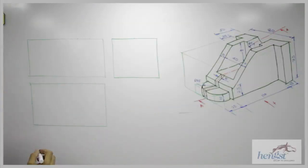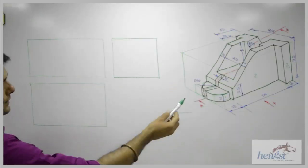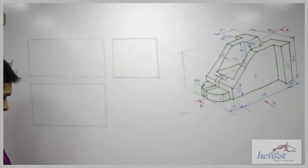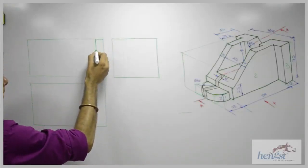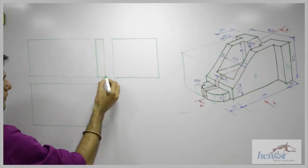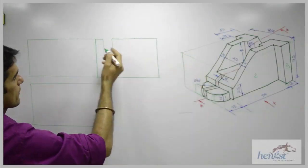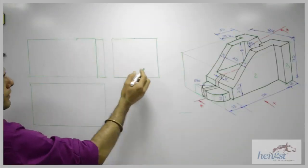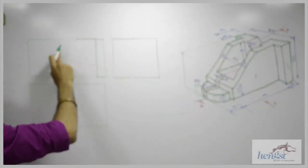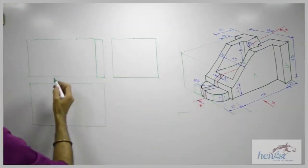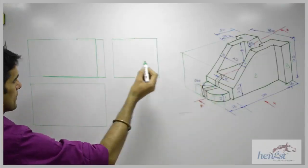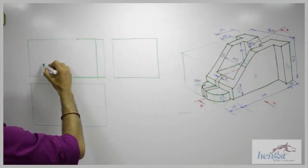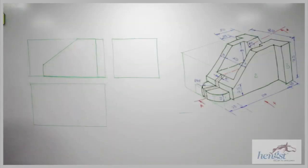Looking at the front view, there are 3 parts. First I will draw part 3, which is 15. Then they are given 50, so from here we will take 15. Then we have a slope — we take 110 here, then go up by 25 and join this slope. So we are done with part 2.